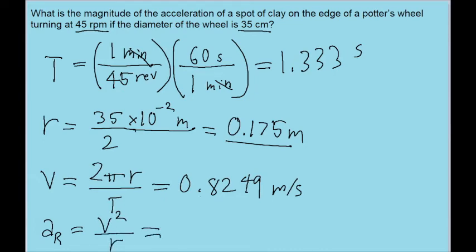So all we got to do is take this value here that we found and substitute it in for v, so we square it, and then divide it by r, which as we discussed earlier, is going to be 0.175 meters.